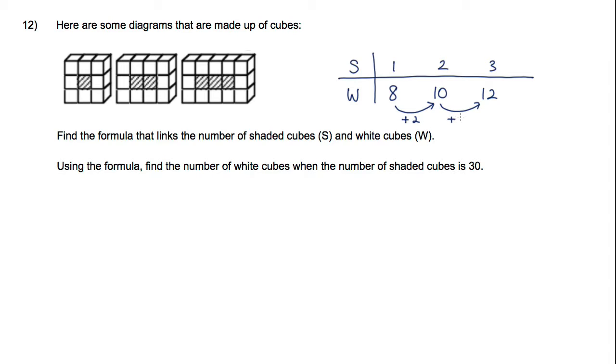So the rule is that W is equal to 2 for this value here S, and then we need to go to the zero term. Well the zero term we can drop that in here, and if we had a zero term that would be a value of 6 for the white, so 2S plus 6 and that is our rule.